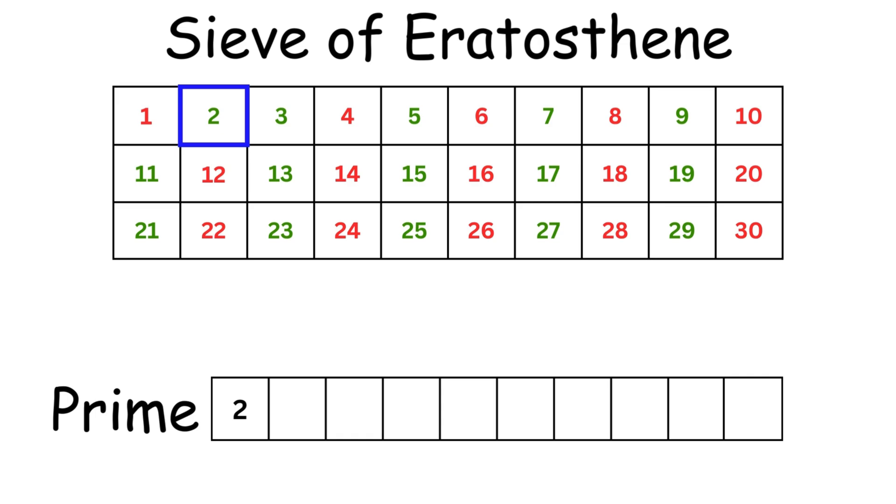The algorithm finds the next true element. So in this case, 3, and adds it to the primelist, same as before. Now all of the multiples of 3 in the array are set to false.